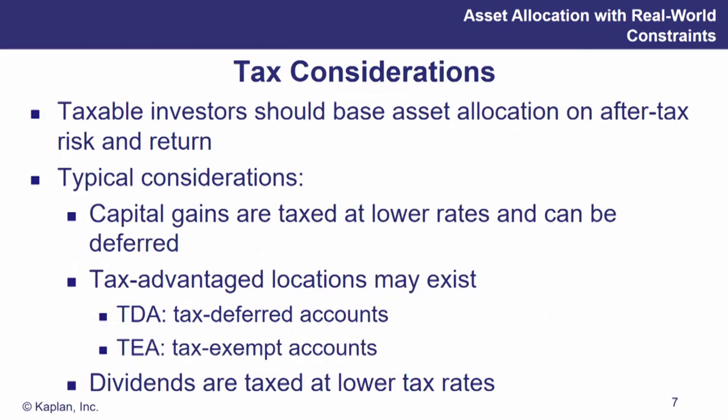Next: tax considerations. Taxable investors should base asset allocation on after-tax risk and return, which will play a role in the type of strategy you pursue. The higher the tax rate, the greater the benefit in tax-exempt securities. It also lends more credence to a passive type of investment policy, simply because the more you trade — particularly selling assets with a capital gain — the sooner you're realizing that gain, making it less tax efficient.